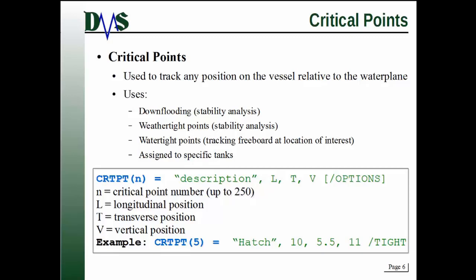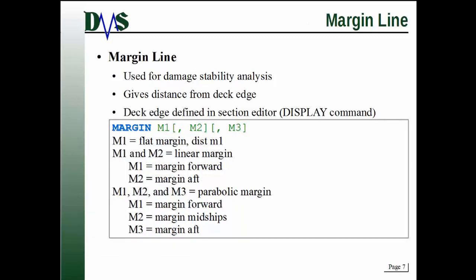And I will point out also that these critical points, the coordinates, they're relative to the ship. So as the ship pitches, rolls, heals, when you're looking at all that changing for stability analysis, the critical point moves with the ship. And that's why we have the, that's how it's tracking its position relative to the water plane.